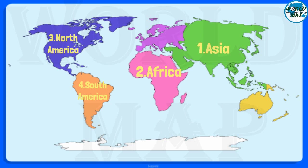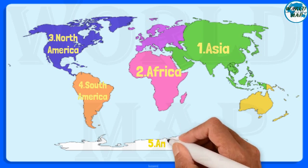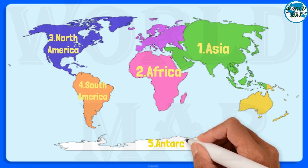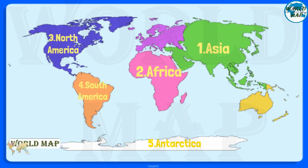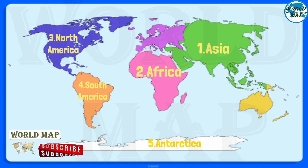Number 5. Antarctica. It is the fifth largest continent on Earth with no countries and permanent human habitation. However, the continent has permanent human settlements where scientists and support staff live on a rotational basis.